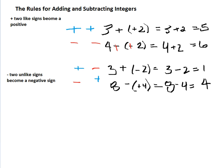All we need to remember is two like signs become positive and two unlike signs always become a negative sign.